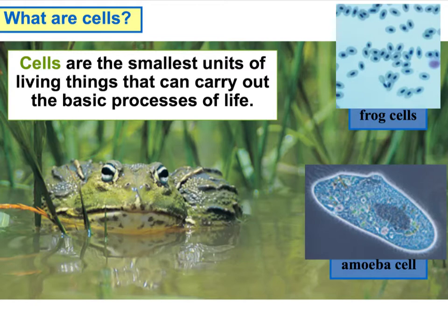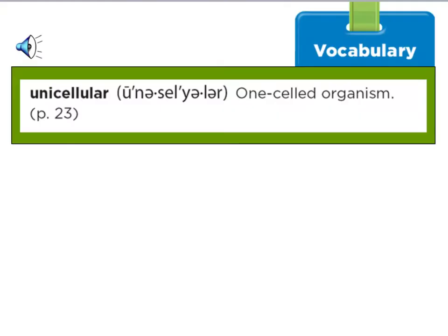There are two types of cellular organisms: unicellular and multicellular. A unicellular organism is a one-celled organism, and it carries out all those basic life processes. The prefix "uni" means one — so one cell.